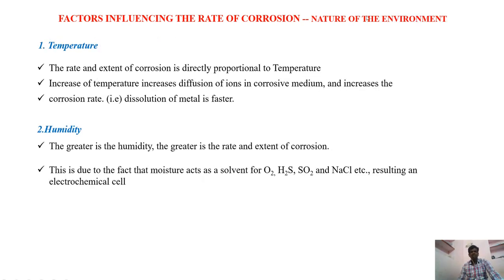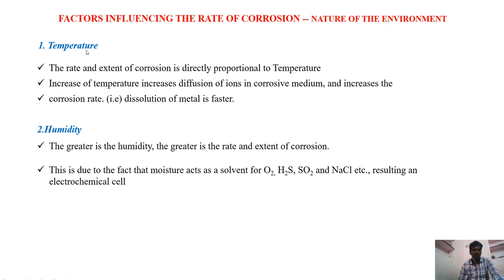Next are the factors influencing corrosion under the topic of nature of the environment — how the environment increases the rate of corrosion. First of all, temperature. If the temperature is more, the rate of corrosion will become more, because temperature increases the diffusion of ions inside the metal. Greater the temperature, faster will be the corrosion.